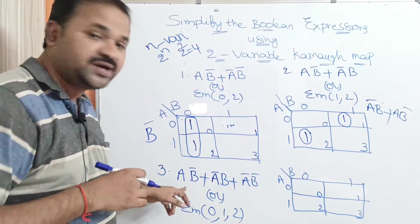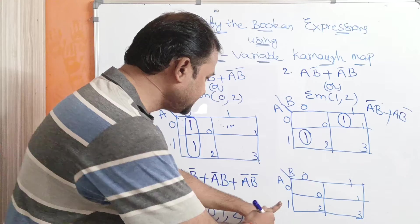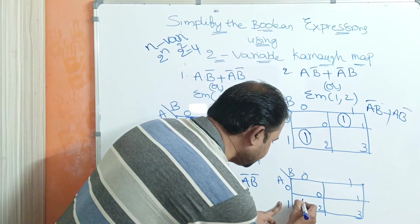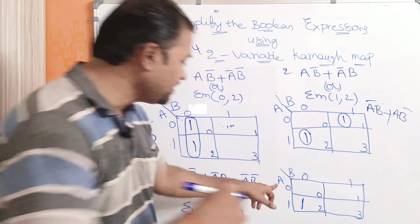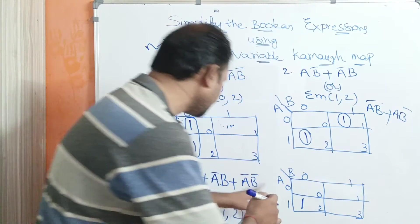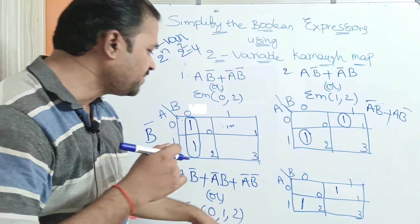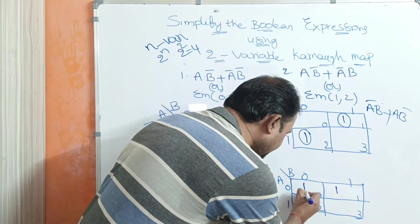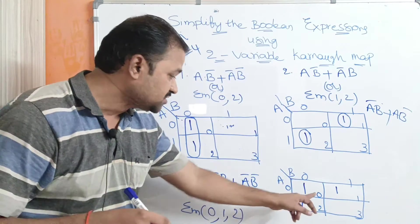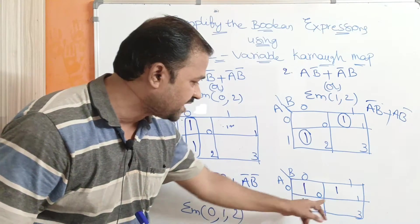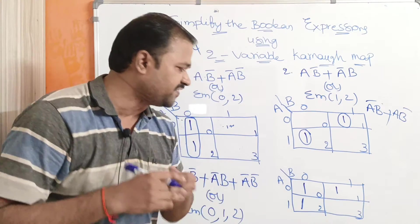Now let us see the last example: ab̄ + āb + āb̄, or sigma m of 0 comma 1 comma 2. For ab̄, we write 1 in that cell. For āb, ā means this row and b equals 1 means this cell, so write 1 there. For āb̄, that is the first cell — write 1 there. Equivalently, minterm 0, 1, and 2 each receive a 1.